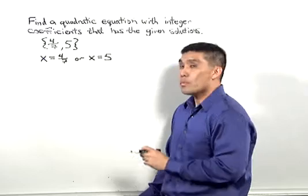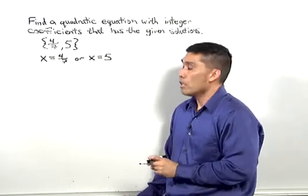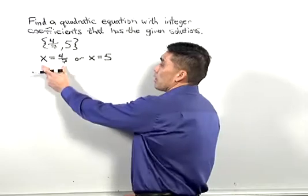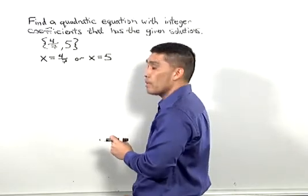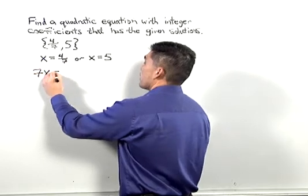Let's try to rewrite this problem by using some algebraic manipulation. The first equation, I'm going to multiply both sides by 7. Multiplying both sides by 7, I end up with 7x equals 4.